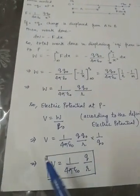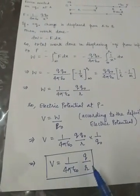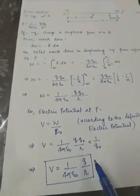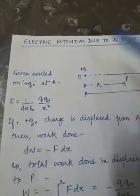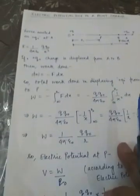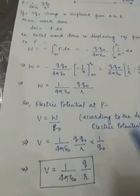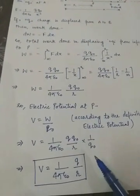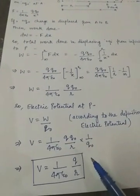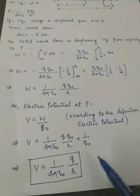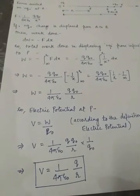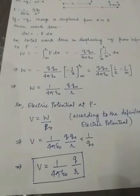This is the expression for electric potential due to a point charge plus Q at a distance R from it. Electric potential is a scalar quantity, so there is no direction associated with it. That is all for this video, thank you.